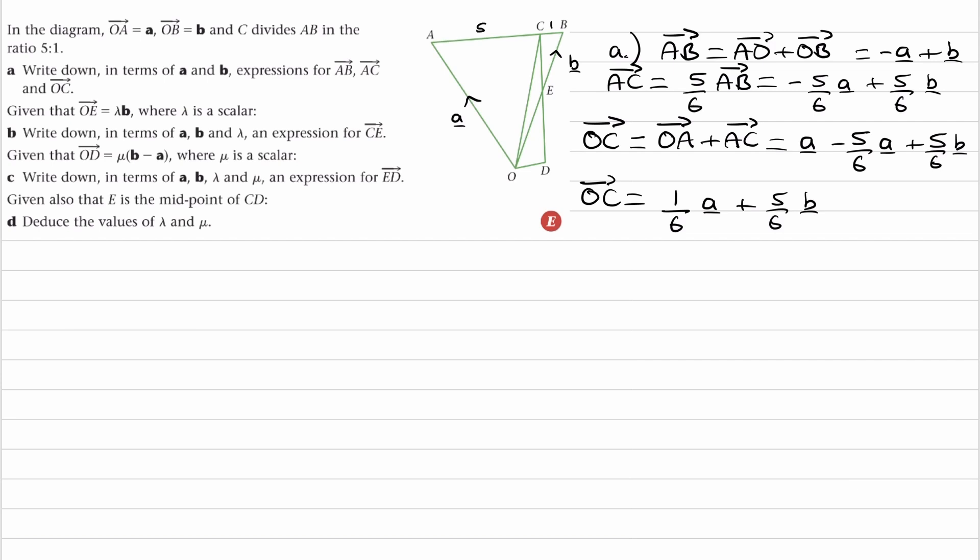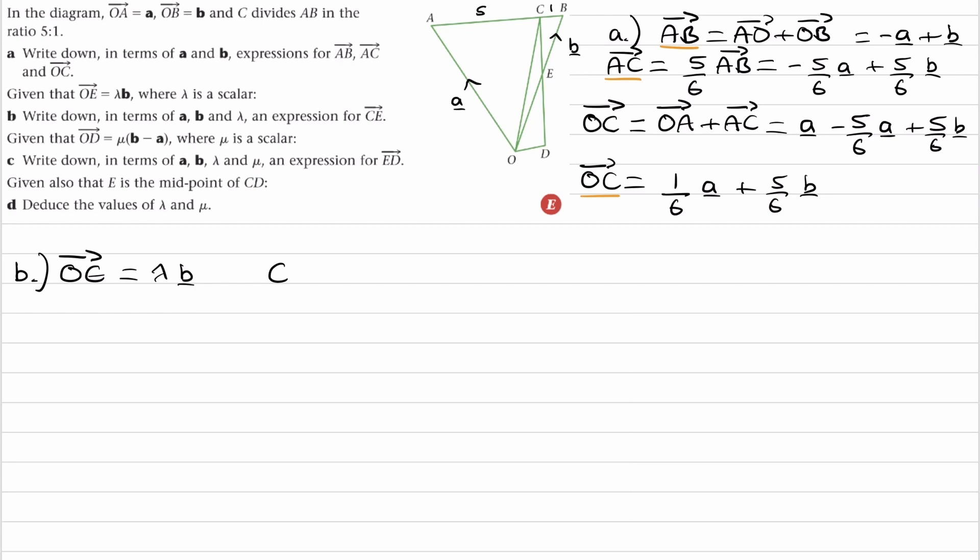Okay, so we worked out AB, AC, and OC. Now, for part B, we're told that OE is equal to lambda b, where lambda is a scalar, and we're trying to work out what is CE. Okay, so I think to work out CE, the best thing to do would be to go from C to O and then O to E.